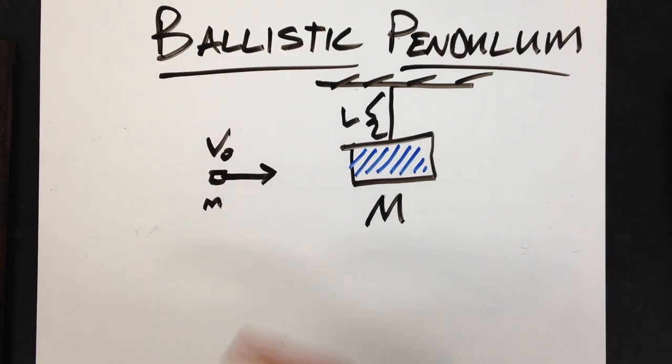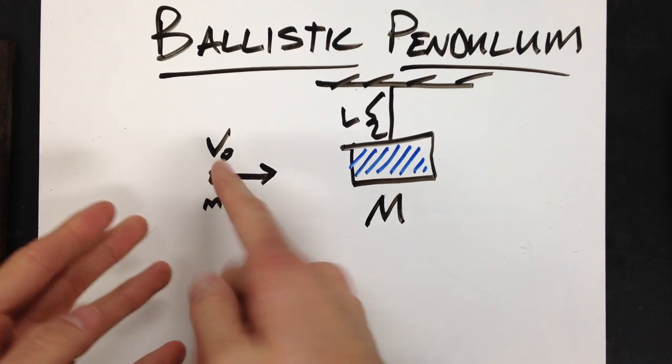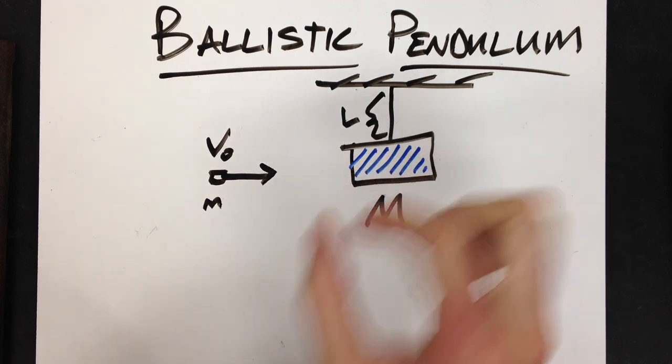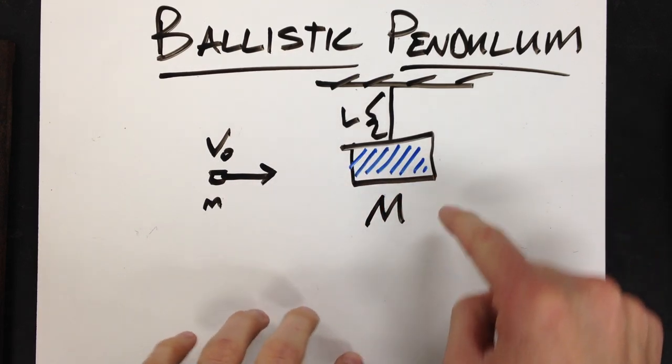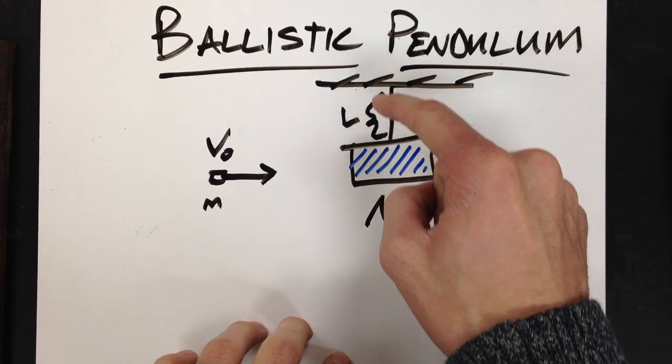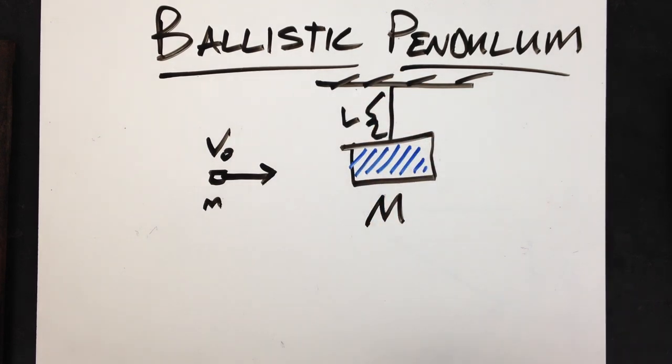In a ballistic pendulum, you will generally have a ballistic and a pendulum. Here I've got a bullet with just a mass, lowercase m, traveling at an initial velocity v-naught. It's going to hit, strike, and embed itself in my pendulum, which has a mass capital M, and it's on a string with a length L.